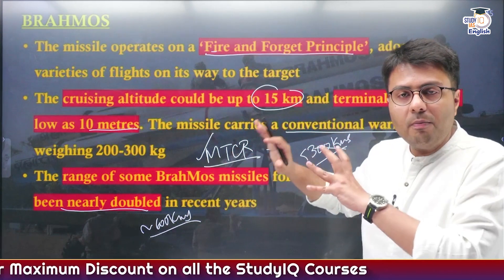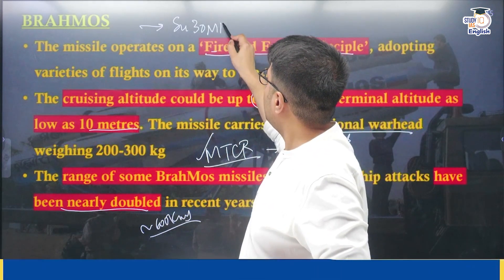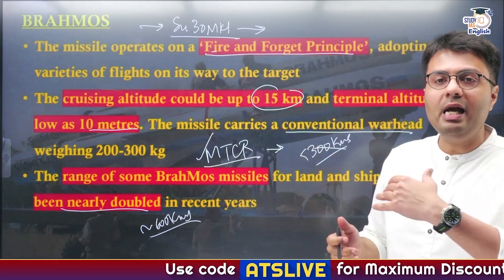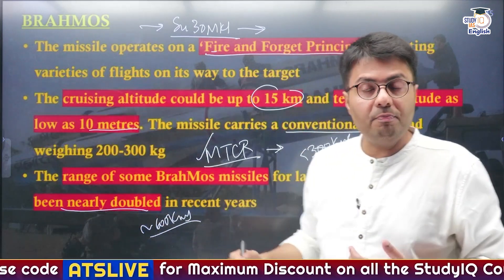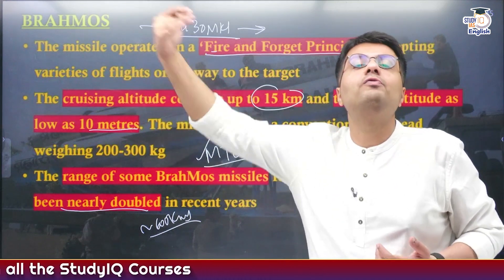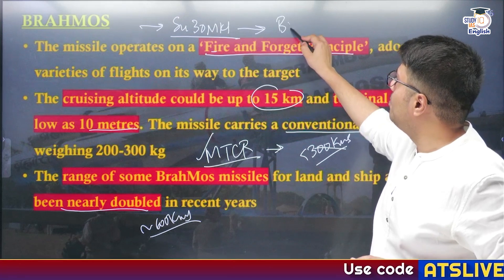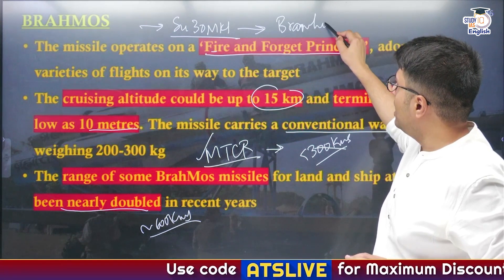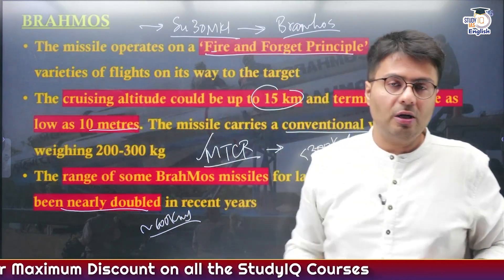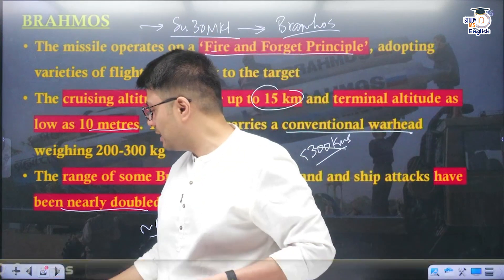The best part of the BrahMos missile is that it has been integrated with India's Sukhoi 30 MKI fighter jets. When these fighter jets carry BrahMos missiles, India's ability to strike any target becomes quite improved. Since they can be deployed in a fighter aircraft, the effective range of these missiles is further extended by adding the range of the fighter aircraft. BrahMos over the Sukhoi 30 MKI aircraft were used extensively by India to target military as well as terrorist infrastructure in Pakistan.